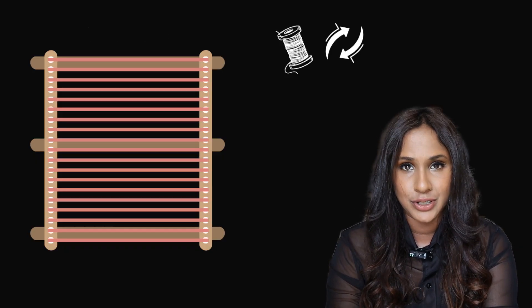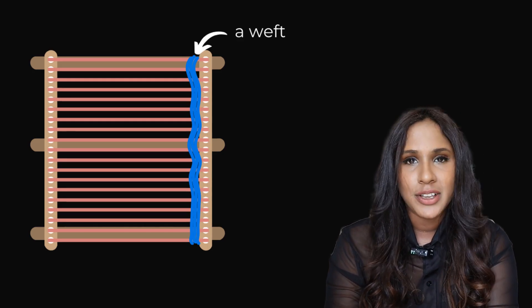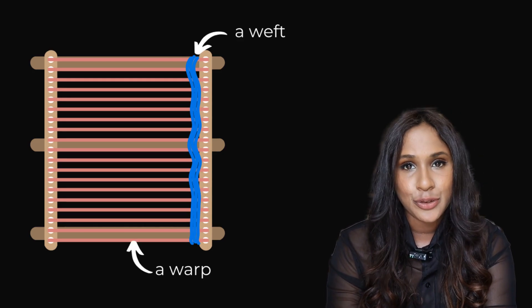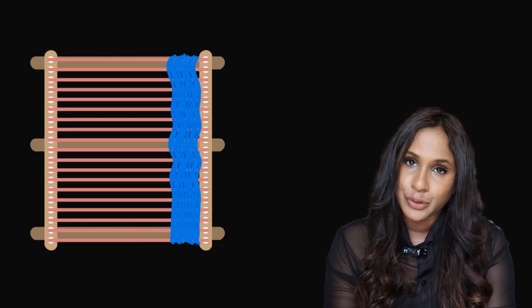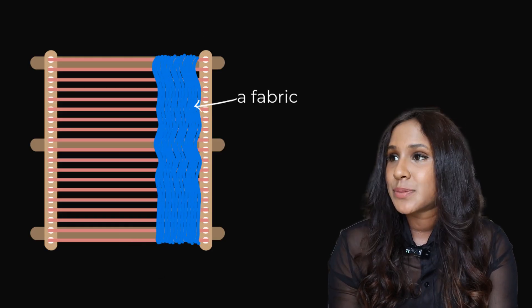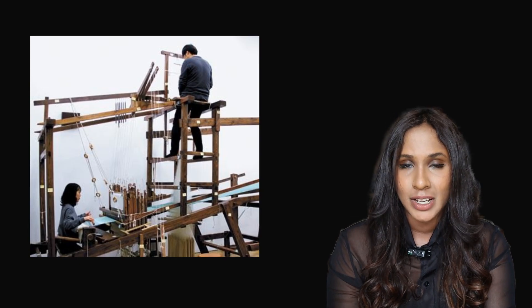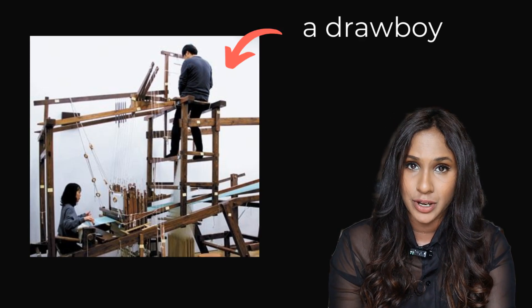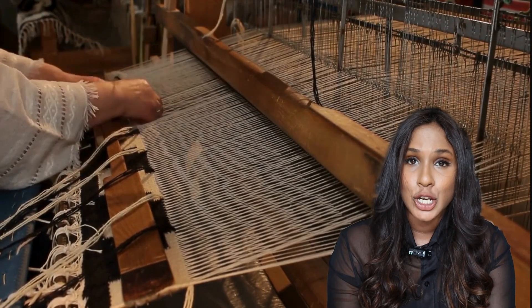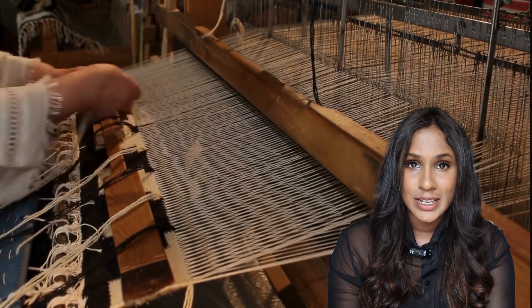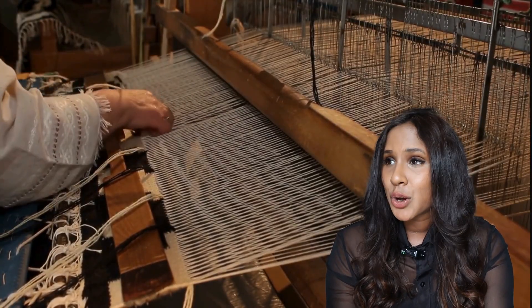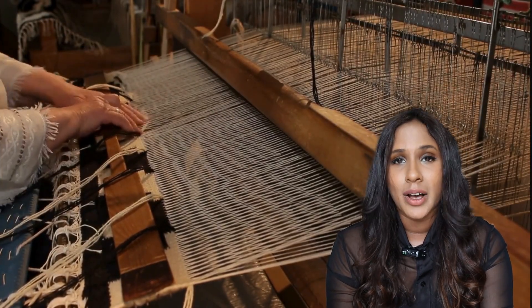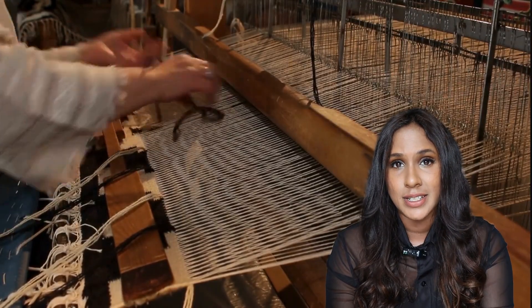To weave a fabric on a loom, threads are woven in two directions: a thread called a weft, which passes over and under a set of threads called a warp. This crisscrossing of threads forms the fabric, and the specific pattern depends on the way the wefts interlace with the warp. Before the Jacquard system, a weaver's assistant known as a drawboy had to manually raise and lower the warp threads to create patterns in the fabric. This was a slow, tedious process that required a lot of time.